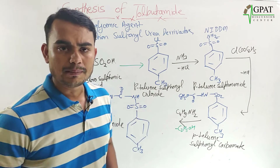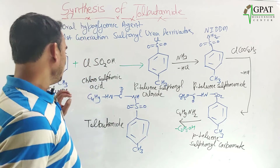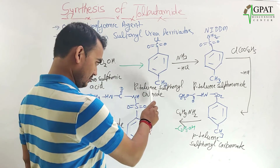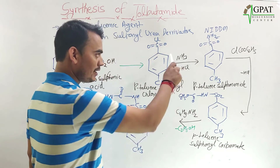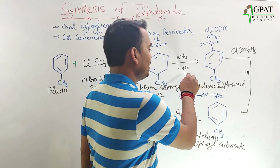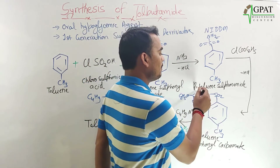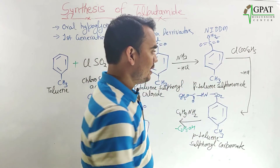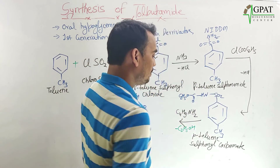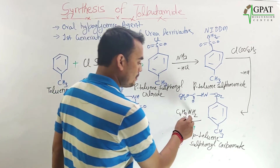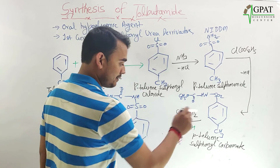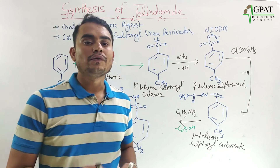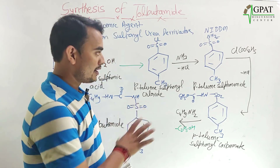This is a simple 4-step reaction. First, toluene reacted with chlorosulfonic acid to form paratoluene sulfonyl chloride. Second, reaction with ammonia gave paratoluene sulfonamide. Third, reaction with ethyl chloroformate gave paratoluene sulfonyl carbamide. Finally, reaction with butylamine gave tolbutamide — an oral hypoglycemic agent used for NIDDM. Thank you.